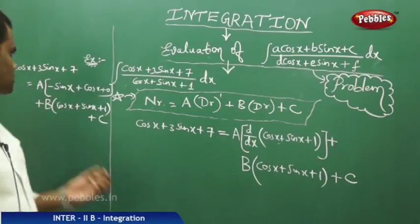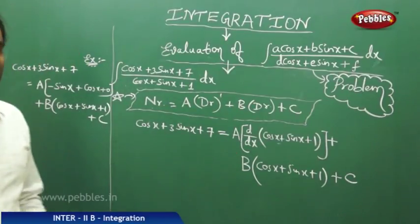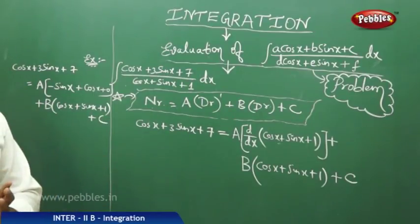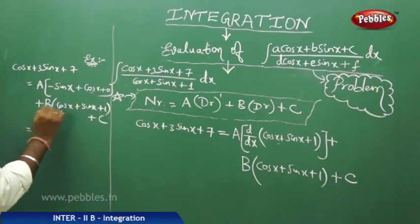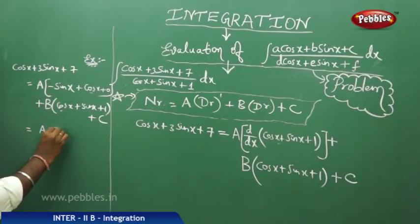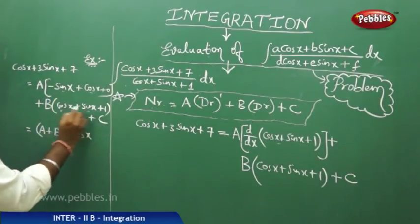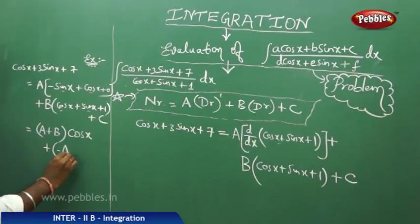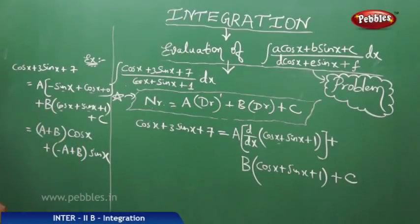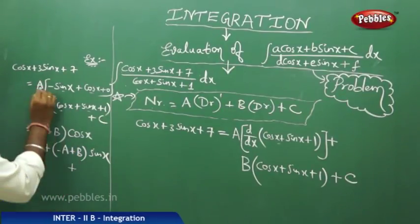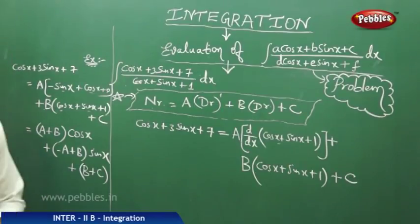Now I try to take all cos x terms, sin x terms, and constants together. Grouping cos x terms: (α + β)·cos x. Grouping sin x terms: (-α + β)·sin x. And taking constants: α·0 + β·1 + γ = β + γ. So cos x + 3sin x + 7 = (α + β)·cos x + (-α + β)·sin x + (β + γ).